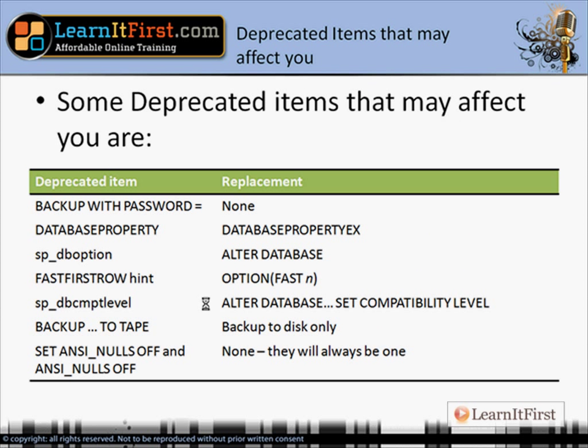Now let's look at the deprecated items. I have several pages here and I've tried to cherry-pick the ones most likely to be found in a production system. If you were using passwords on backups, that's gone. Fast first row hints are gone — you have to change it to OPTION FAST. The SP_DBCMPTLEVEL compatibility level procedure is gone; use the ALTER DATABASE command instead. And we can no longer backup to tape — it's disk-only backup now.